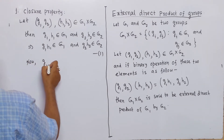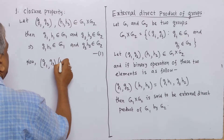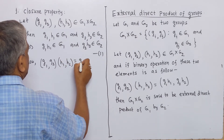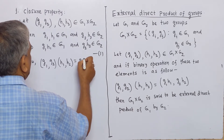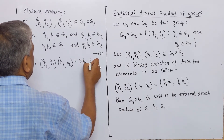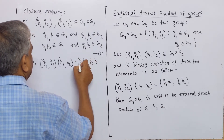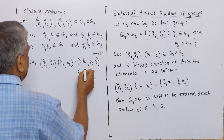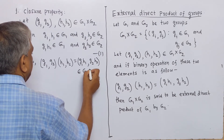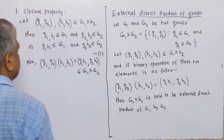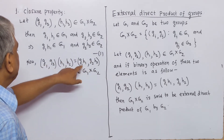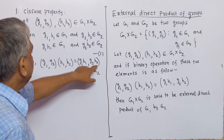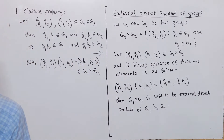Now, (g1, g2) · (h1, h2) = (g1·h1, g2·h2), which is an ordered pair. This ordered pair belongs to the direct product G1 × G2, since from (1), g1·h1 belongs to group G1 and g2·h2 belongs to group G2.